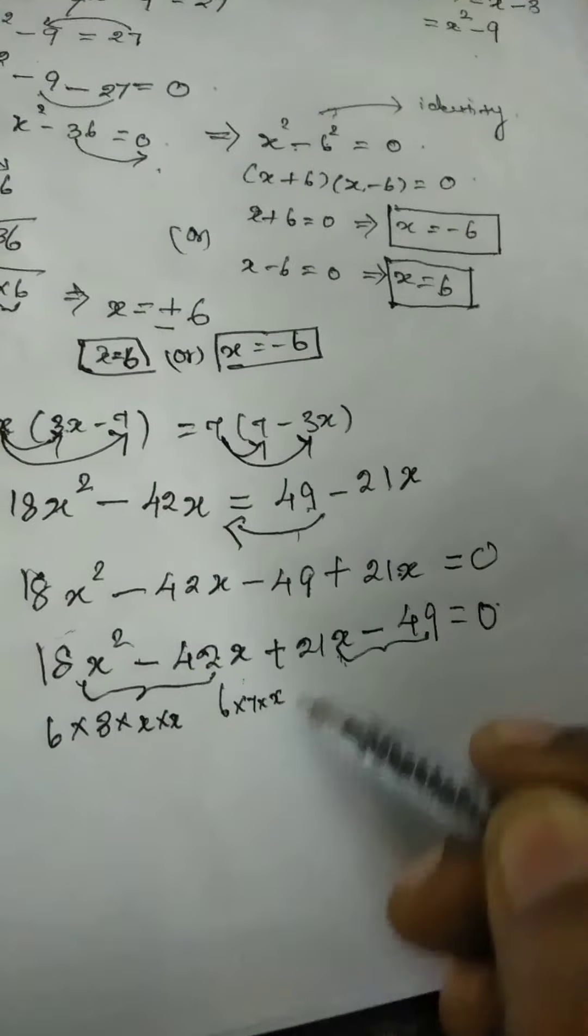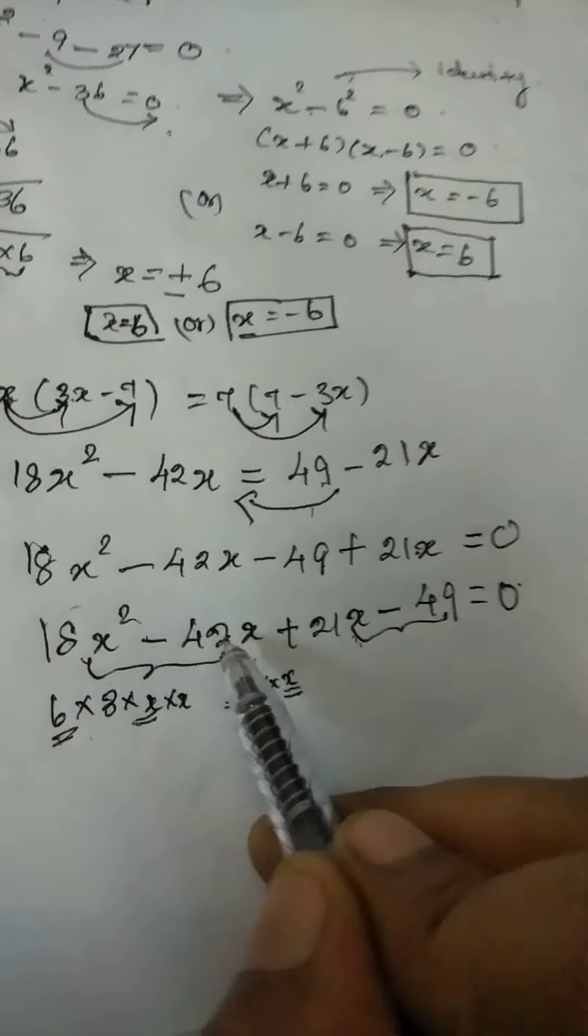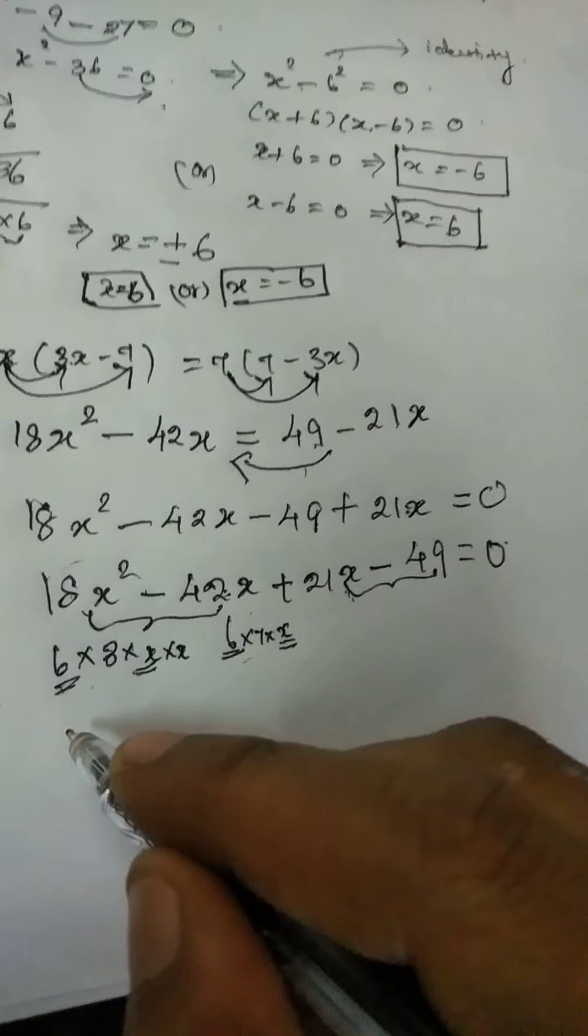42, how can we write it is 6 into 7 into x. Now you see here both the terms, what are all the numbers are common. Here we have 6 and here also we have 6 and here we have x and here also we have x.